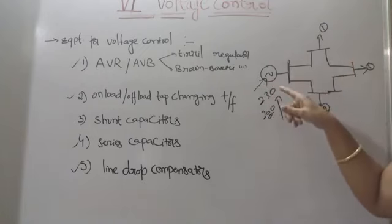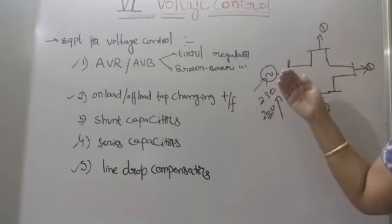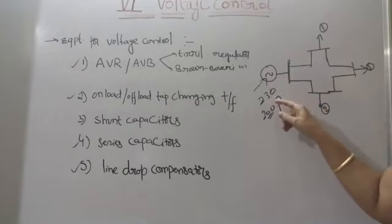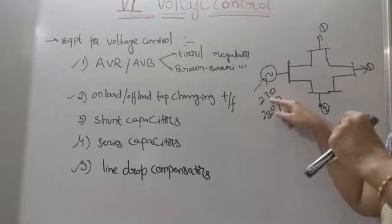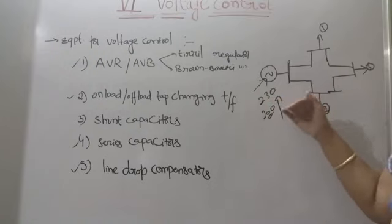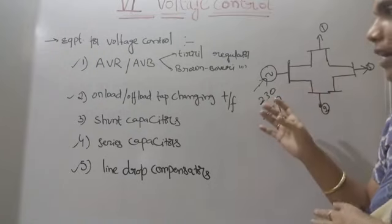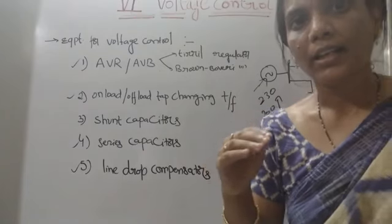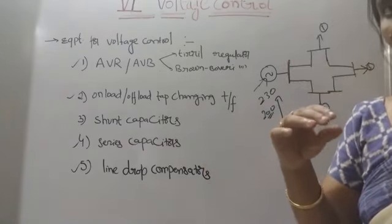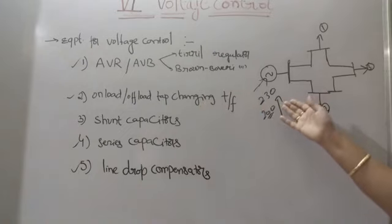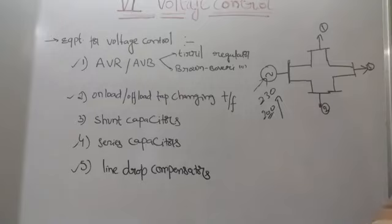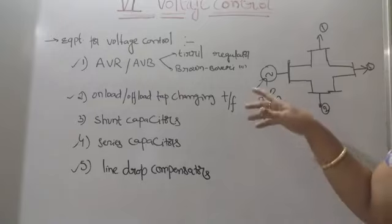When the voltage at the generator is less than the permissible limit, for example 218 volts instead of 230 volts, it will automatically increase the field winding excitation up to getting this value to 230 volts. That is the purpose of the AVR.